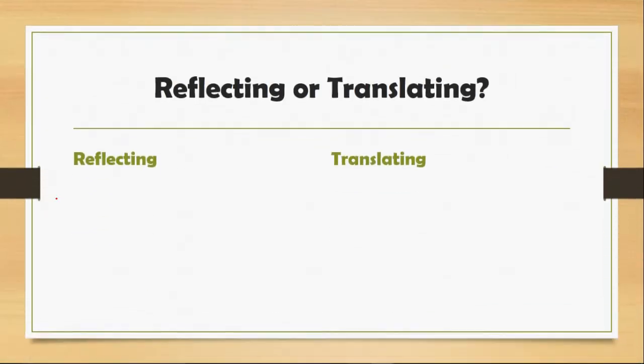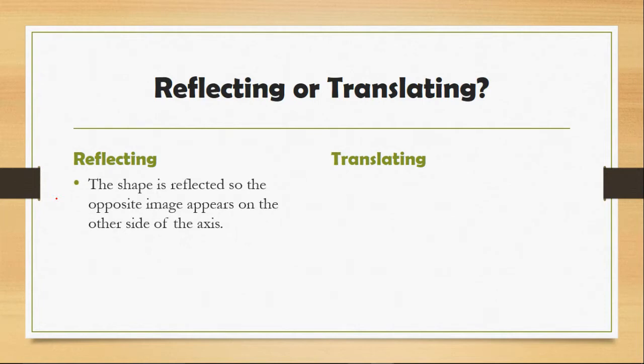So just a quick recap, when we're looking at reflecting or translating it's important to remember these points. Reflecting is where a shape is reflected so the opposite image appears on the other side of the axis. If you imagine holding a mirror along the axis and you are drawing the shape that appears in the mirror on the other side of the axis.